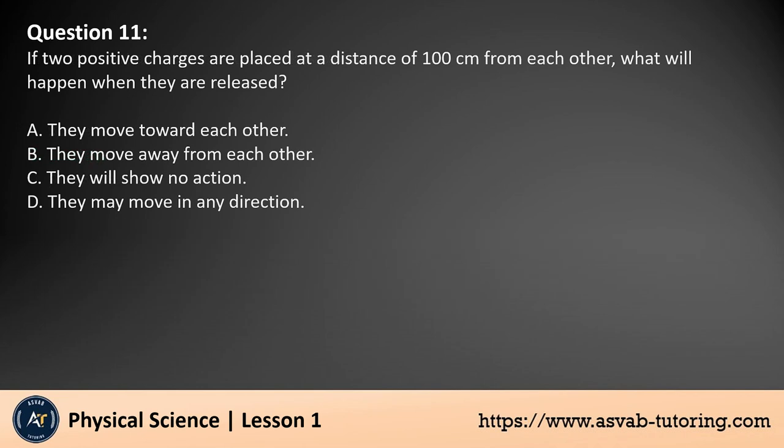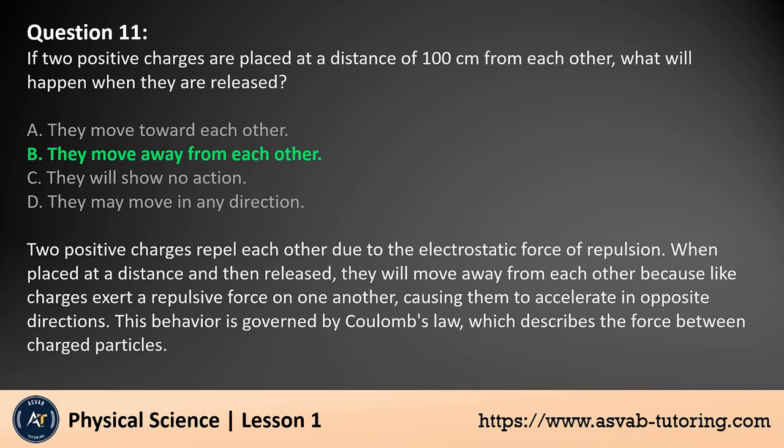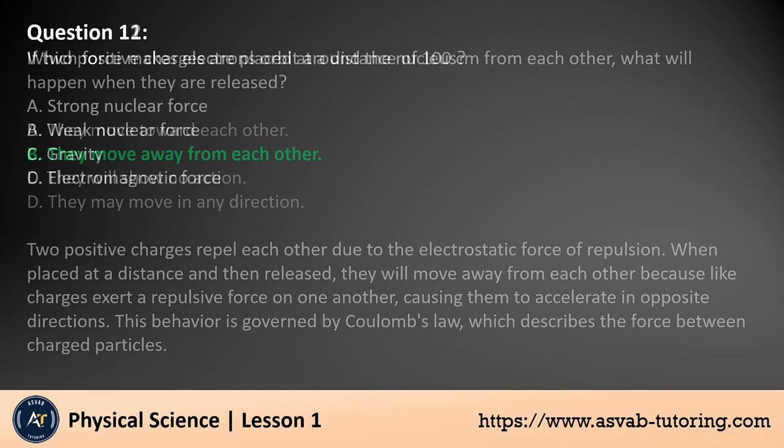Question 11: If two positive charges are placed at a distance of 100 centimeters from each other, what will happen when they are released? A. They move toward each other, B. They move away from each other, C. They will show no action, D. They may move in any direction. The answer is B. Two positive charges repel each other due to the electrostatic force of repulsion. When placed at a distance and then released, they will move away from each other because like charges exert a repulsive force on one another, causing them to accelerate in opposite directions. This behavior is governed by Coulomb's Law, which describes the force between charged particles.